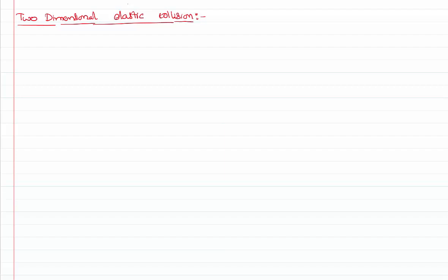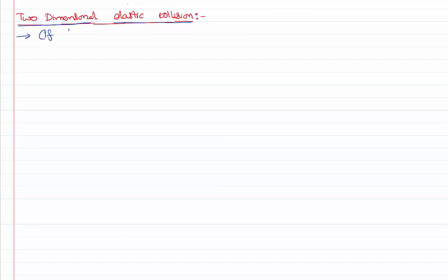Hello everyone, welcome to this video lesson. We are going to have a quick look at the two-dimensional elastic collision. First of all, a collision is said to be elastic if momentum is conserved — that means initial momentum equals final momentum — and kinetic energy is also conserved, meaning initial kinetic energy equals final kinetic energy. Both must be conserved for a perfectly elastic collision. We also add the condition that the bodies are not moving in only one direction or dimension.